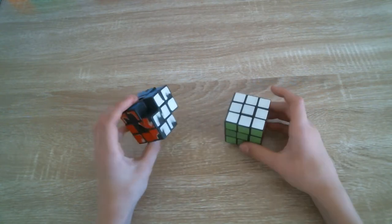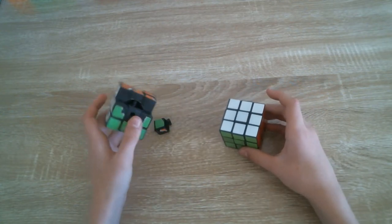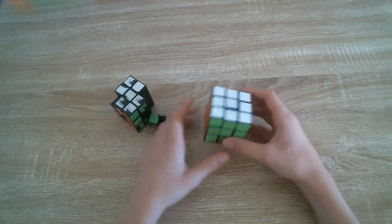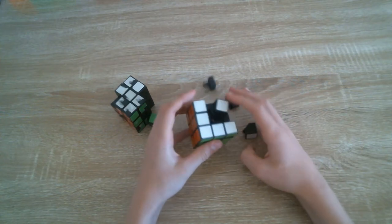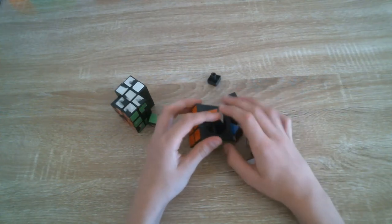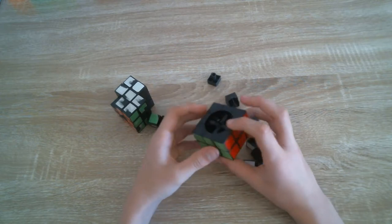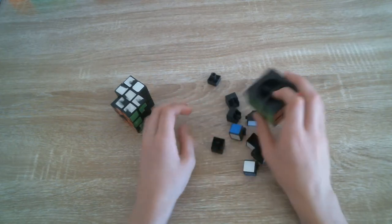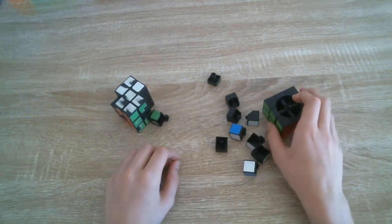Now I'm going to move on to 3x3s. I have 2 dollar store cubes, both of them are broken. This one was my first ever cube. And this one I got a little while back just from my local supermarket. And the center pin broke so the white layer just always falls off.